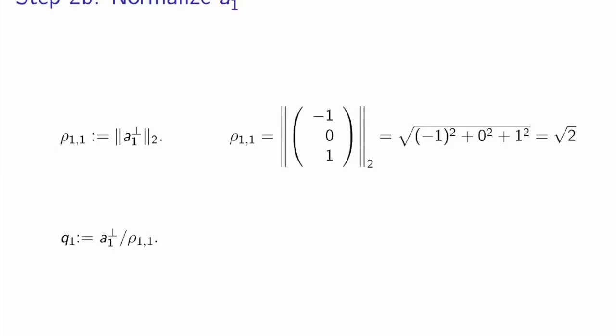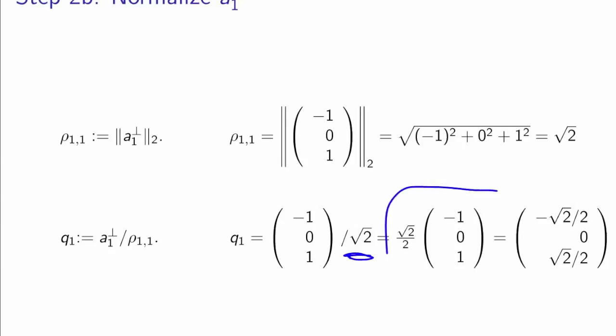If we do that with the specific example we have, this was the vector that we computed as the component of A1 perpendicular to q0. The length of that is square root of 2. And then if we take that vector and we divide it by the square root of 2, we can write that either as this vector right here, or we can explicitly multiply through to get the individual components.